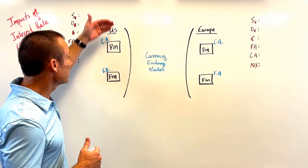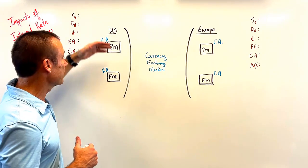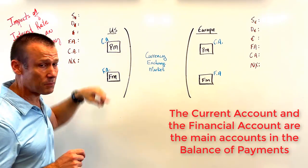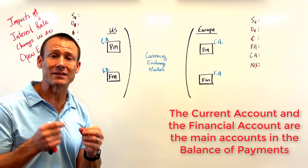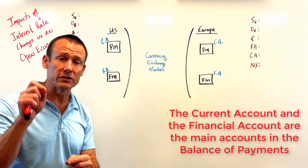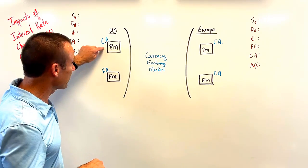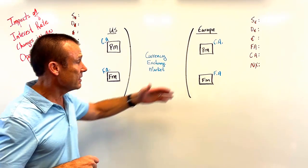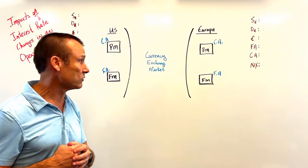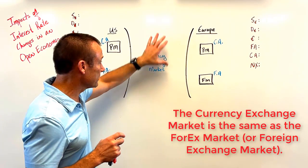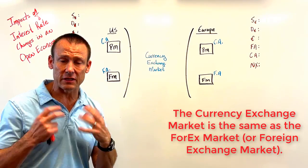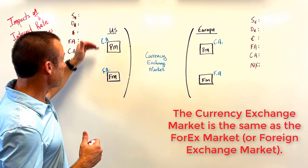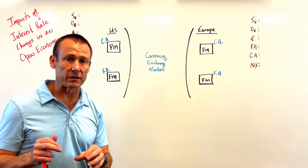I've got a domestic economy — the United States — right here. I've got a product market, and I'm associating the current account with the product market, because the first sub-account in the current account is the sales and purchases of goods and services, so we get changes in net exports. I've got the financial account associated with the financial market, and then I've got that for our foreign economy as well. The currency exchange market sits in between the two countries — that's what we want to think about as we do these problems. I'm integrating the balance of payments with the exchange market.